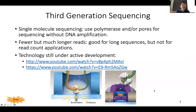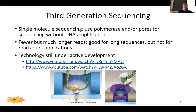The third generation sequencing is really single molecule sequencing — you don't even need to amplify DNA anymore. In first generation sequencing you amplify one tube per molecule; in second generation you amplify in situ on the glass slide. Third generation is truly single molecule: you use either a polymerase or a pore, where sequencing goes through the pore and gives out different signals depending on whether it's A, C, G, or T being incorporated or passing through. So far, technologies such as PacBio and Oxford Nanopore have been released.